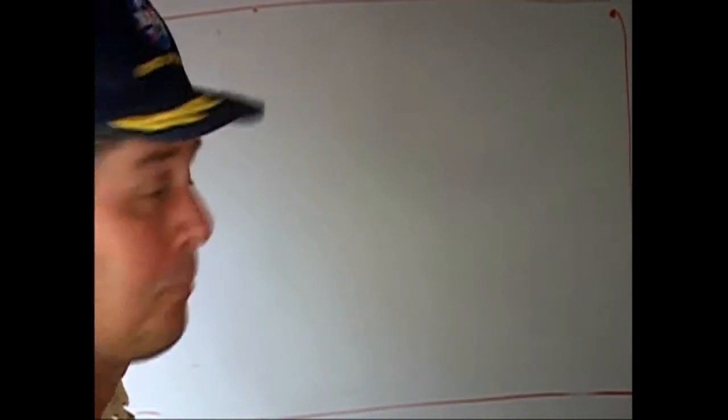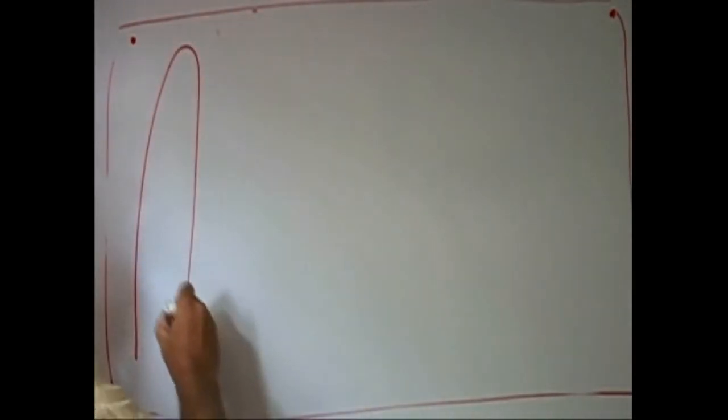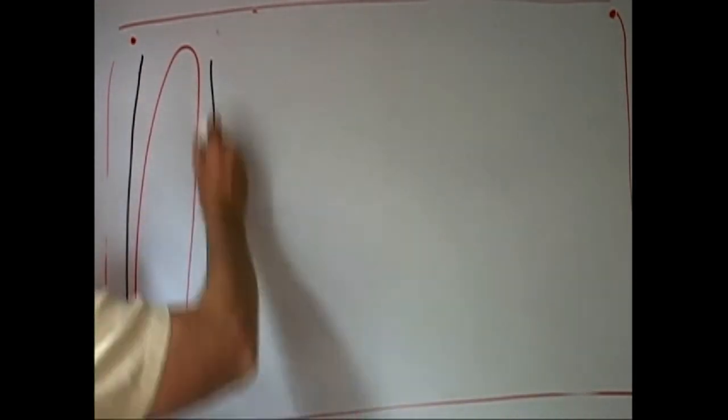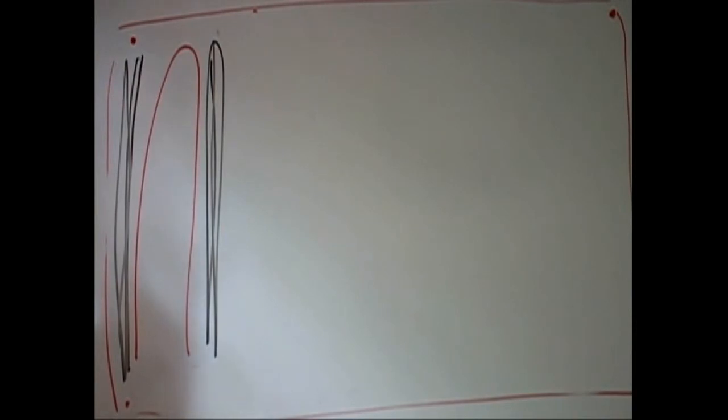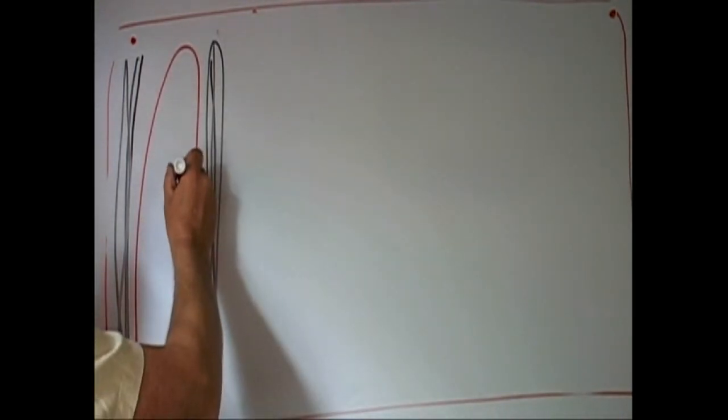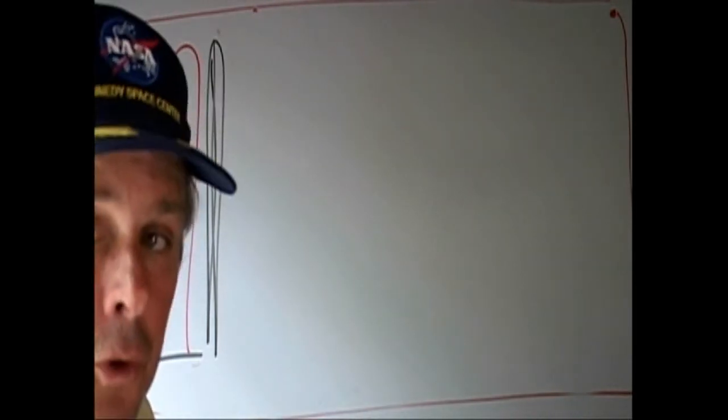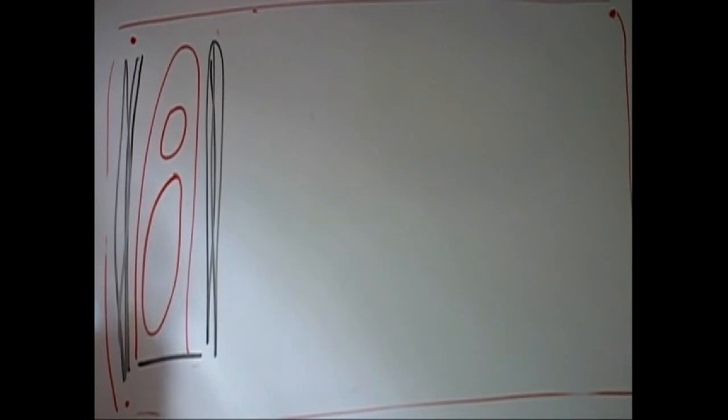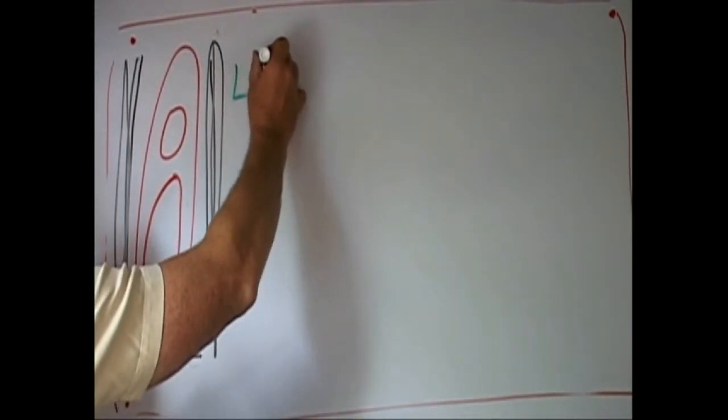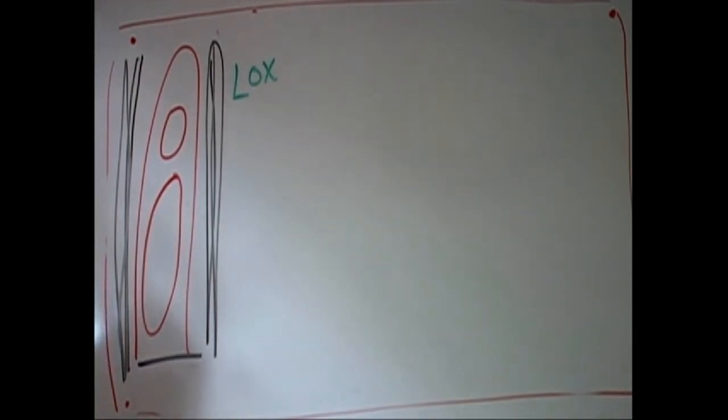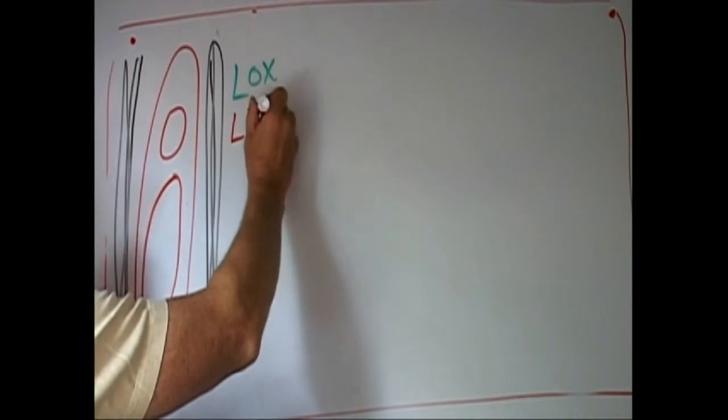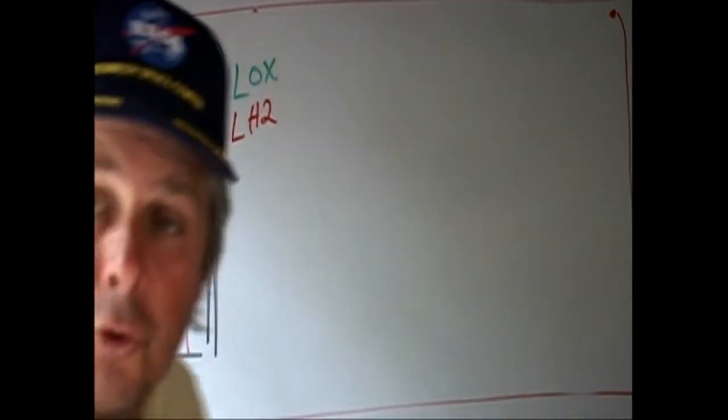A good example I like to show is the space shuttle. You've got this orange tank up there. You have two solid fuel boosters on each side. But, inside the orange tank, on the shuttle, you've got a bigger compartment, twice as big as the other. There's two main compartments. There's two fuels. You have oxygen, liquid oxygen. They say LOX. Liquid hydrogen, LH2.